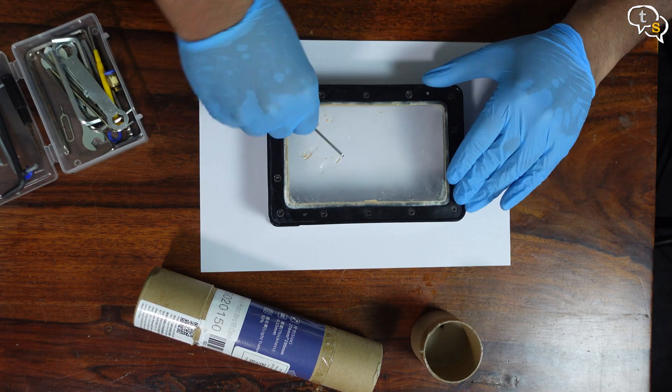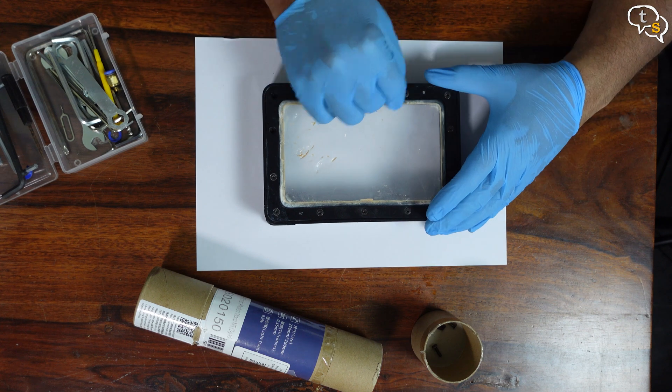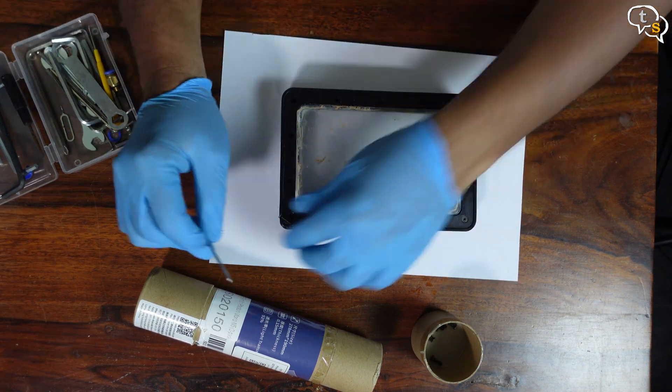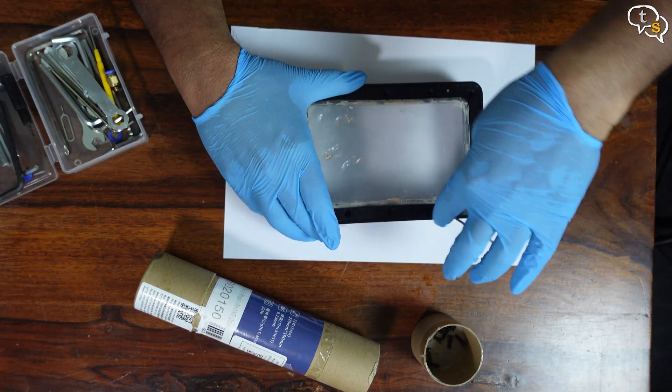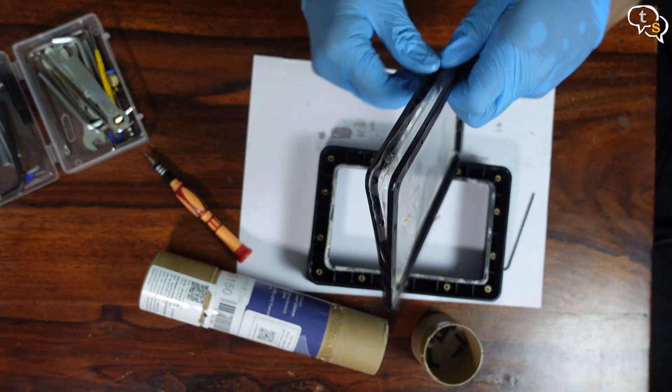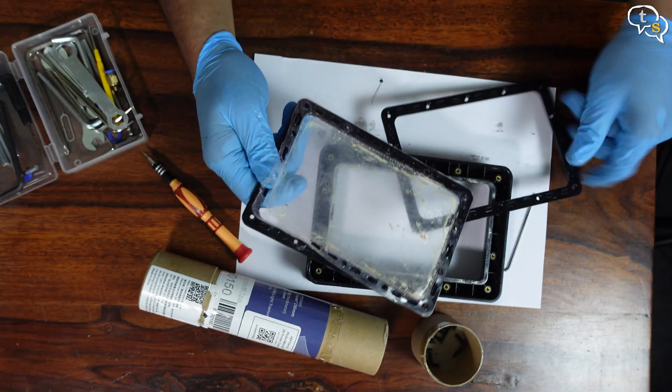Flip the vat upside down, make sure to keep something below in case there's something left in the vat. Use your wrench to remove all the screws around the bottom frame. Once it's open, the FEP is between these plastic sections. Pull them apart and now we have our old FEP out.